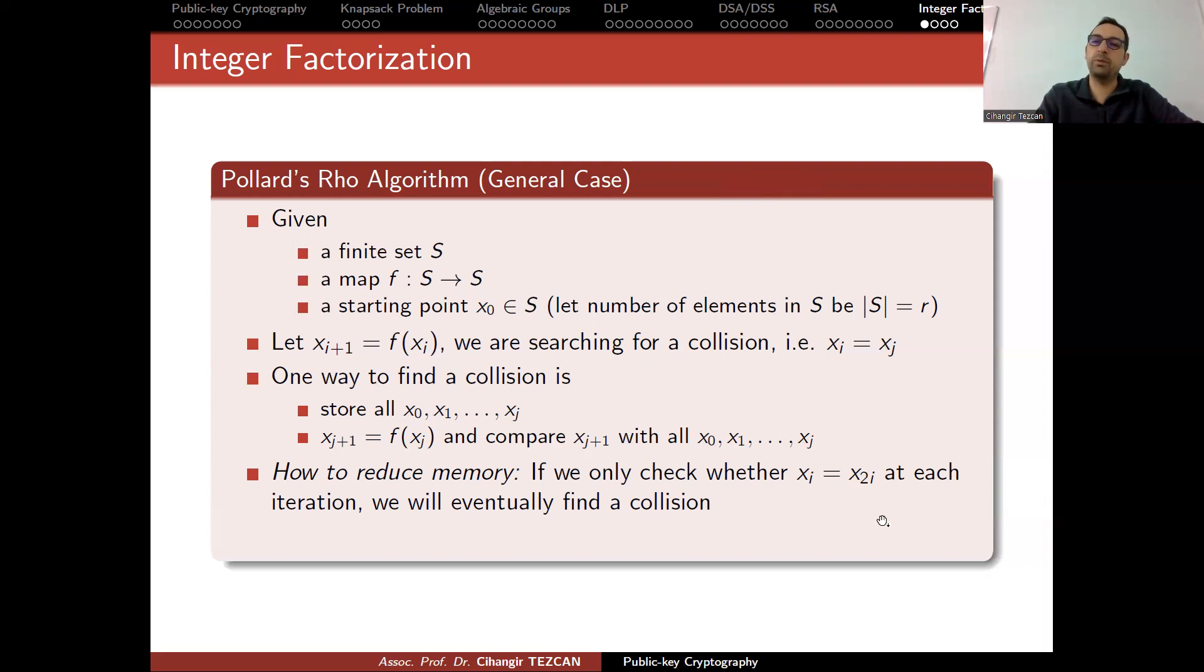You are reducing memory but increasing the time complexity. This is actually a time-memory trade-off. This algorithm has complexity O(√r), where r is the number of elements in this set. This is the reason why we actually double the key size in elliptic cryptography and some other public key cryptographic algorithms, due to this square root.